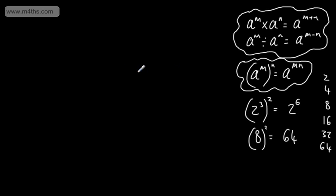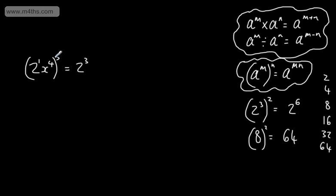We have to be careful with this rule. A common error might be with 2x to the power of 4, raised to the power of 3. We must remember the 2 has a little power of 1. So we get 2 to the power of 3 times 1, which is 2 to the power of 3, and x to the power of 4 times 3, which is x to the 12th. Sometimes students incorrectly write 6x to the 12th — we're multiplying the powers, not multiplying the 3 by the 2.